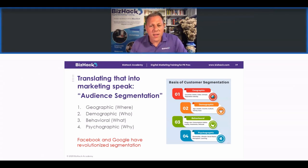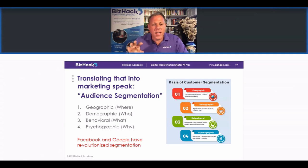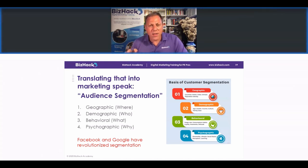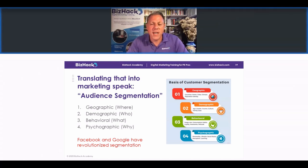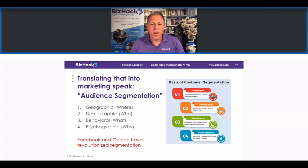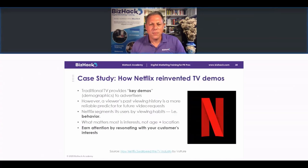Audience segmentation is finding your ideal customers. You can target them geographically — where — demographically — who — behaviorally — what they do — and psychographically — why they do it. Google and Facebook have revolutionized what you can do with segmentation, particularly behavioral and psychographic segmentation.